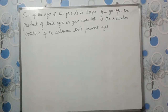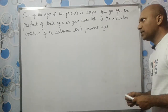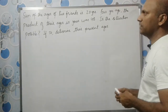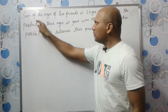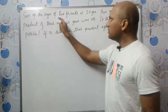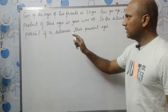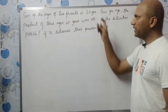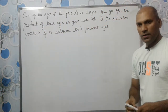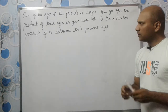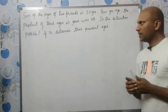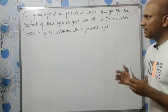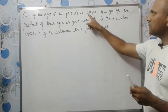Students, in this video we are going to solve this problem from quadratic equations. The question is: the sum of ages of two friends is 20 years. So there are two friends, and if we add the ages of the two friends it is 20 years.